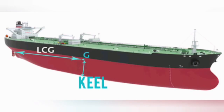The keel: It is the main structural element and backbone of a ship. It runs longitudinally along the center bottom of the hull from stem to stern.